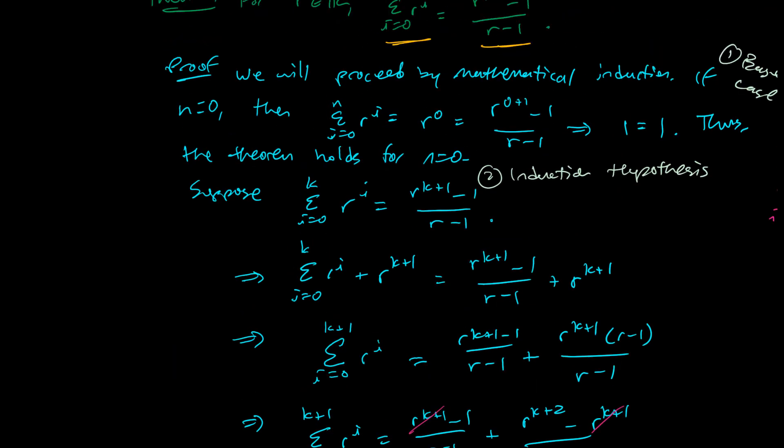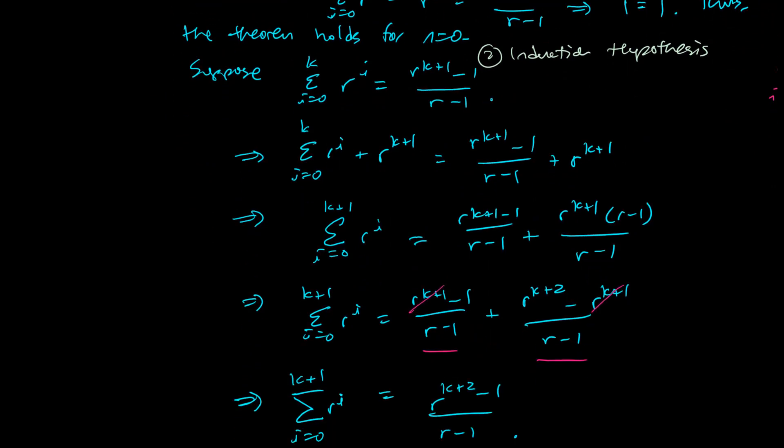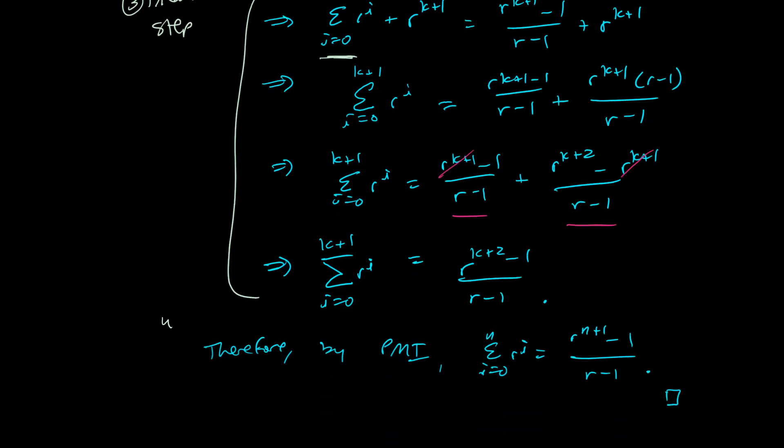Now to summarize, we had our base case and our induction hypothesis, and this part here, which is the meat of the operation, is what we call the induction step. And what that is doing is showing that the kth instance, which is right here, implies the kth plus 1th instance. That's what the induction step is doing. And then finally, we have our conclusion.